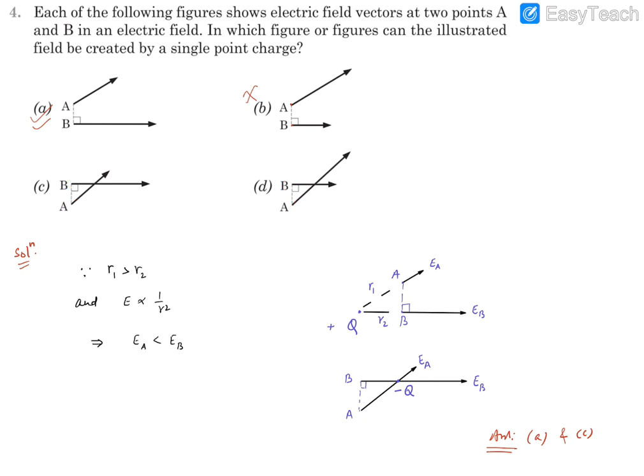Now, these are field lines. Now, even though they appear like they are intersecting each other, but basically they are not the field lines. Basically, they are field directions, electric field vectors. So this is vector at point B, this is vector at point A.